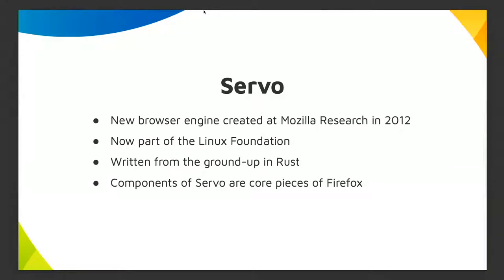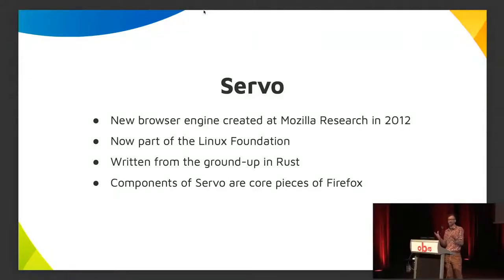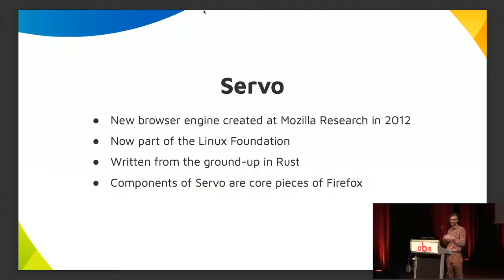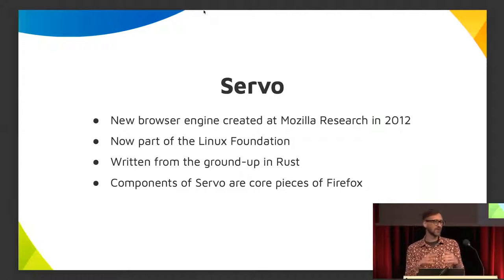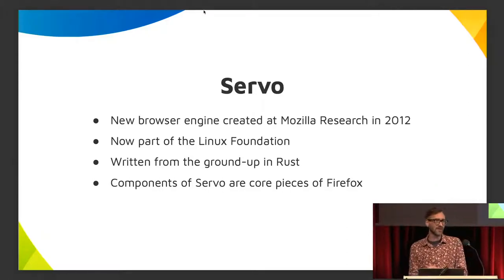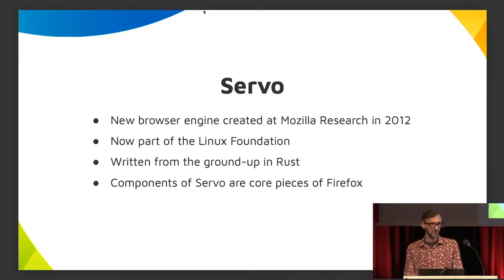Just a little bit of background about Servo. It's a web engine that was created at Mozilla Research in 2012, announced in 2013. Nowadays it's part of the Linux Foundation, and it's a web engine written completely in Rust from the ground up. Some components are written in C, like the JavaScript engine SpiderMonkey. What's happened over time is that parts of Servo have become integral parts of Gecko and Firefox, in particular the style engine. So it's been very fruitful as a place to experiment with things and integrate them into real web browsers.